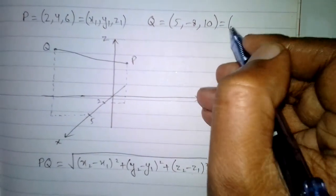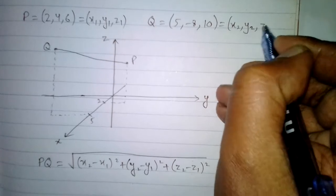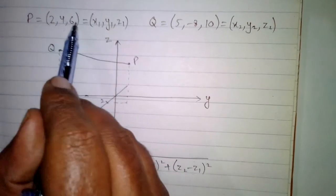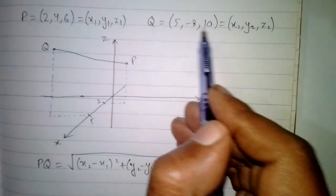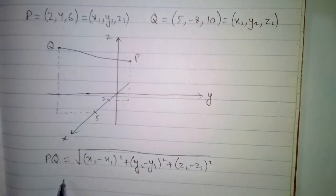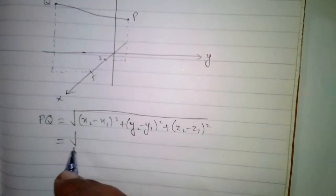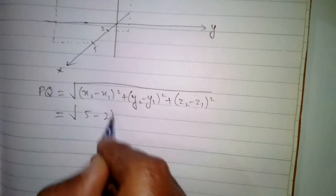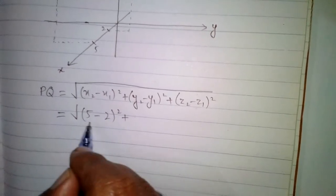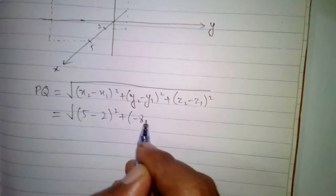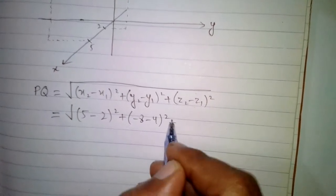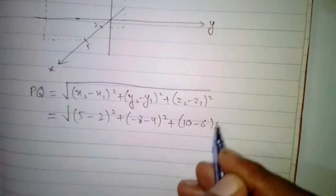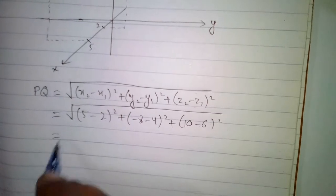P has the coordinates x1, y1, and z1, and Q has the coordinates x2, y2, and z2. The values of x1, y1, and z1 are 2, 4, and 6, and the values of x2, y2, and z2 are 5, minus 8, and 10. We put these values into the formula: in place of x2 we put 5, in place of x1 we put 2, giving us (5 minus 2) squared, plus (minus 8 minus 4) squared, plus (10 minus 6) squared, all under the square root.